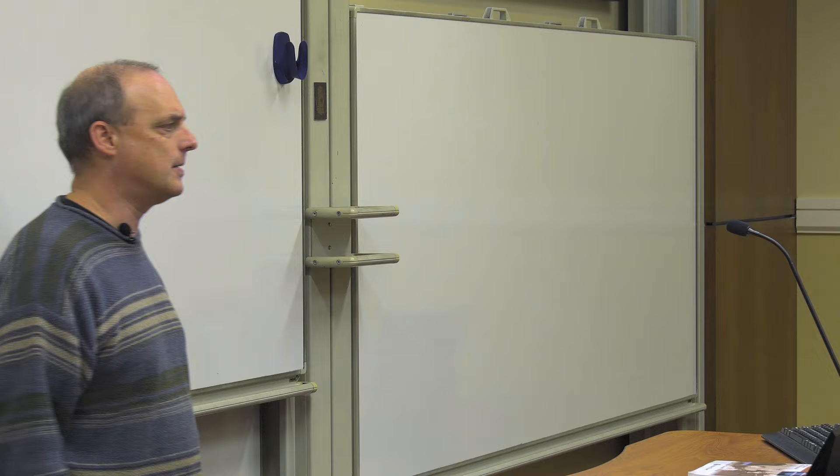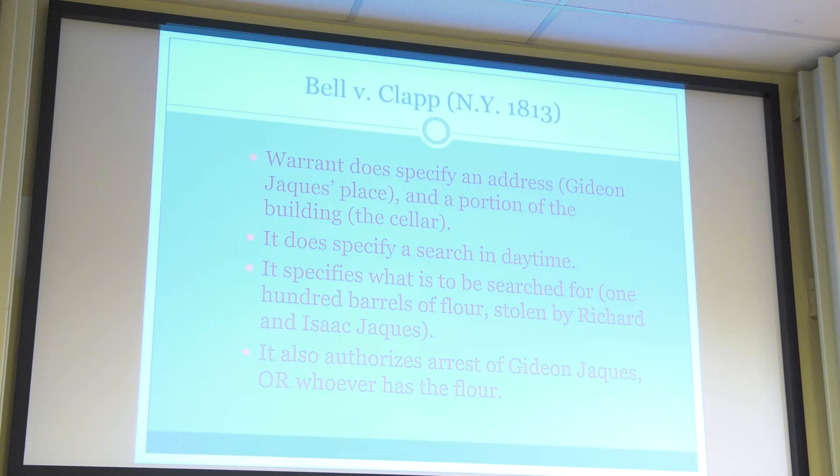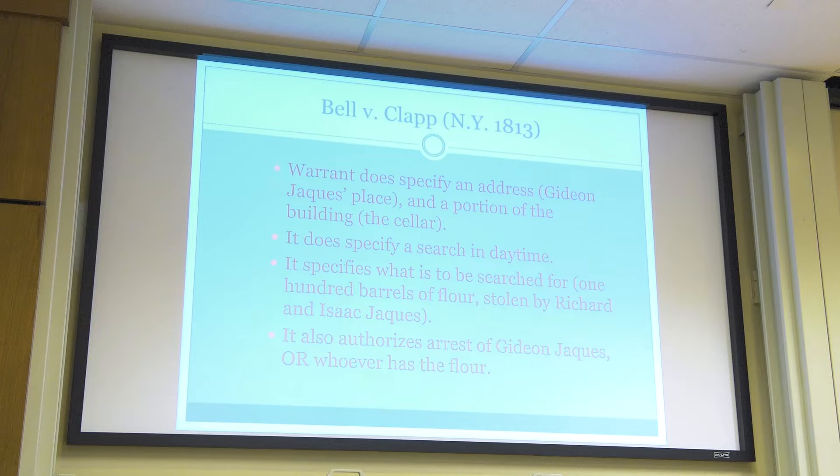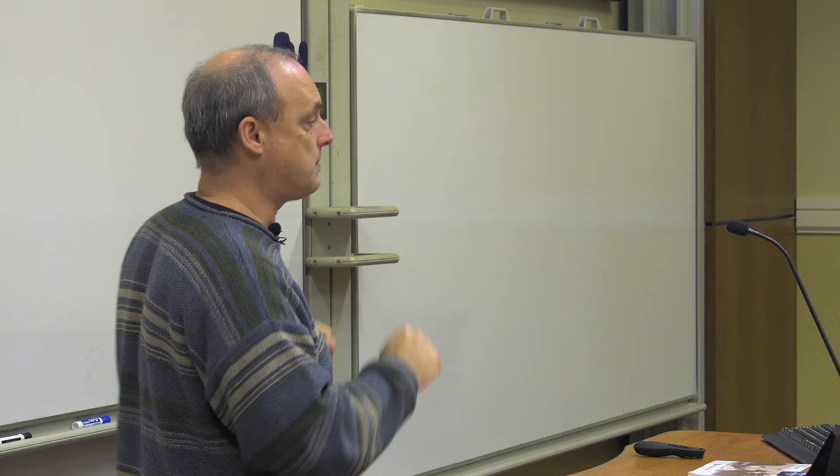We're focusing in particular on the particularity requirement. We've got here an example from New York in 1813 — Bell versus Clapp, a famous old case. We're going to look at two old cases: one where there was enough particularity and another where there was not. In this case, we've got a warrant that does specify a particular address. It says you're supposed to go to Gideon Jacques's place — specifically the cellar of Gideon Jacques's place. It specifies that the search needs to be conducted in the daytime. And it also says you are searching for 100 barrels of flour that somebody stole — specifically Richard and Isaac Jacques stole this — so go to brother Gideon's house to look for the 100 barrels of flour.